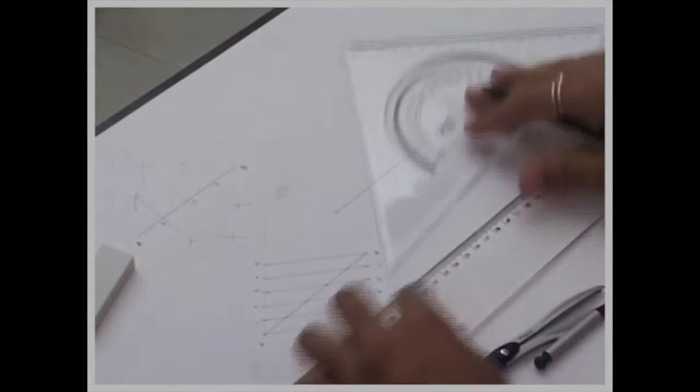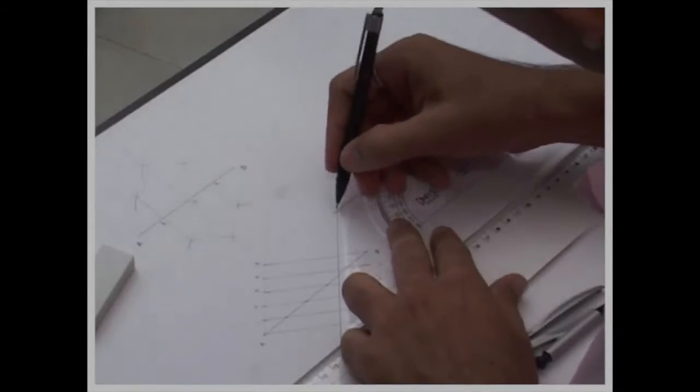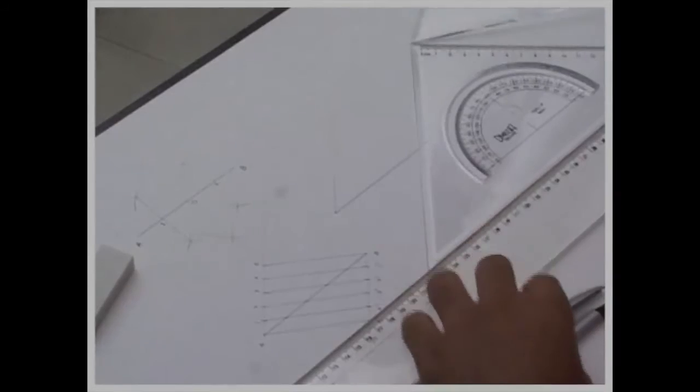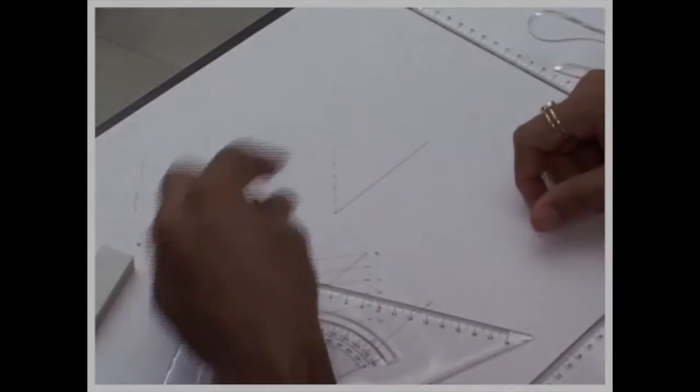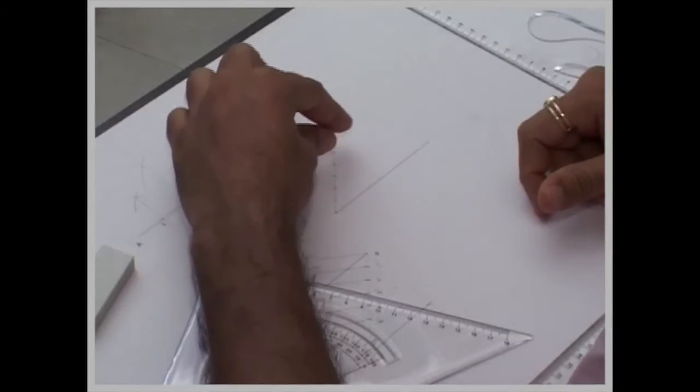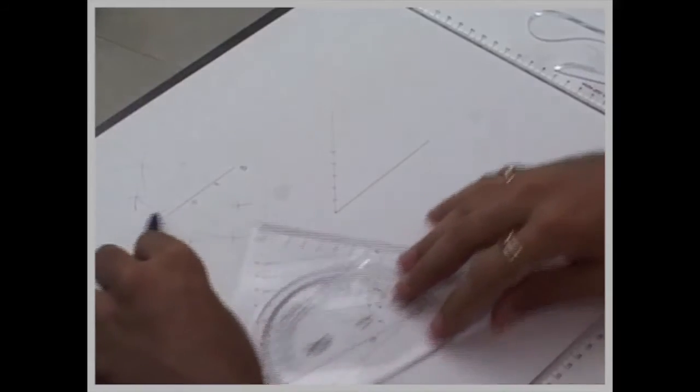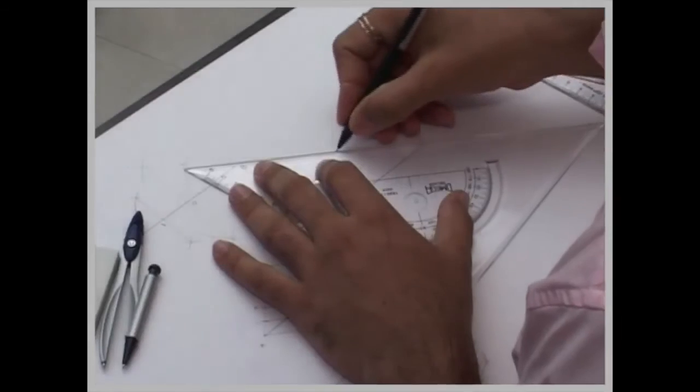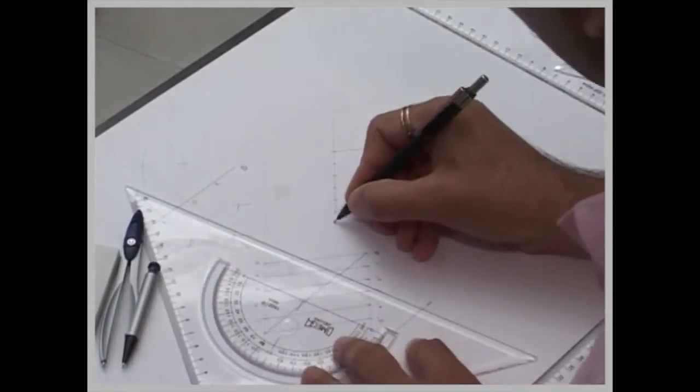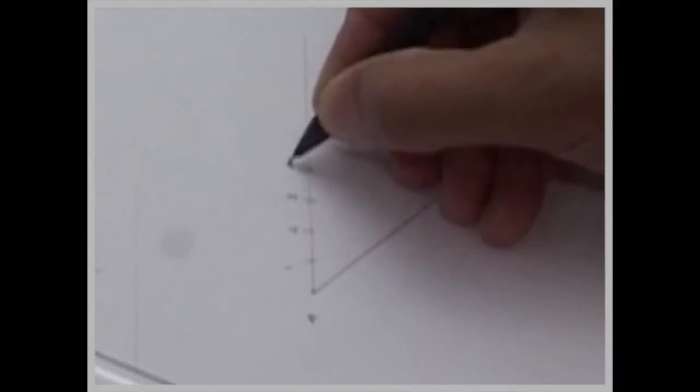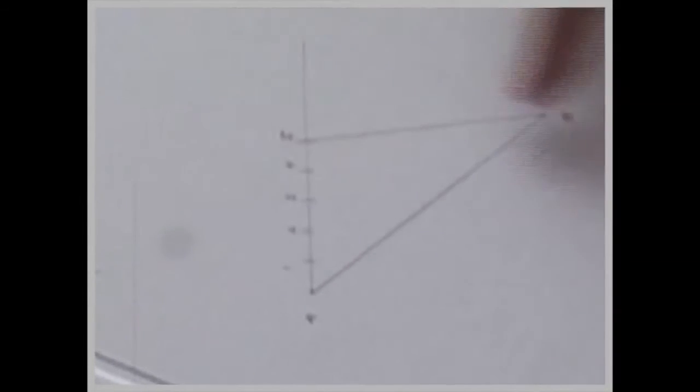Draw line, draw angle. And again you take one centimeter arc. You cut one, two, three, four, five. Then we join the last point to point B. So you join five to B.